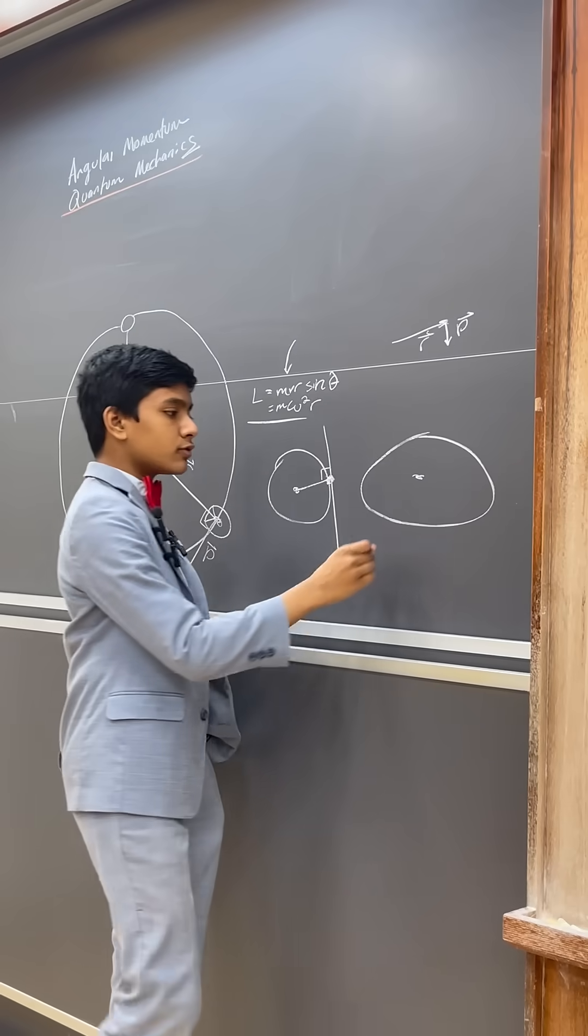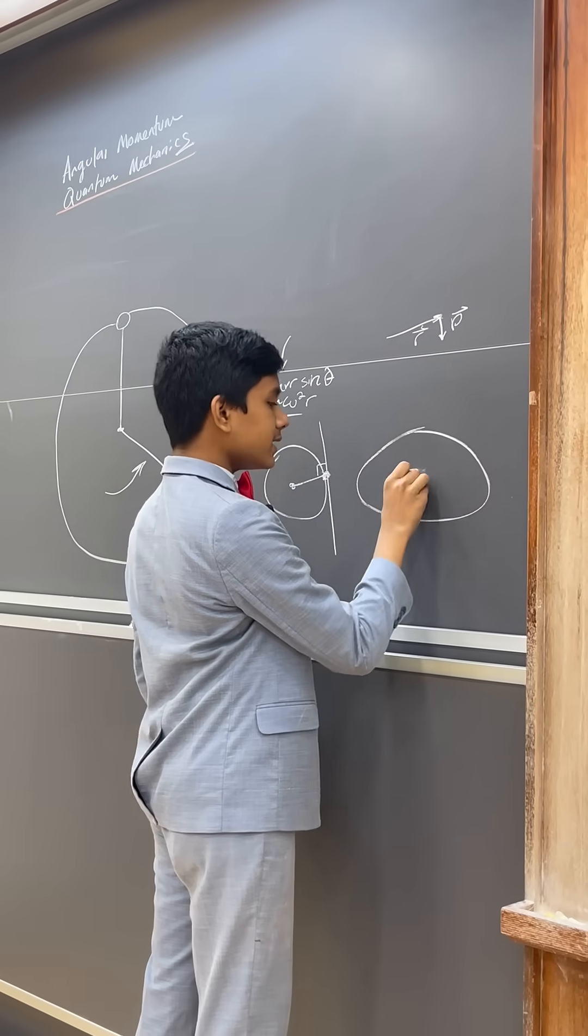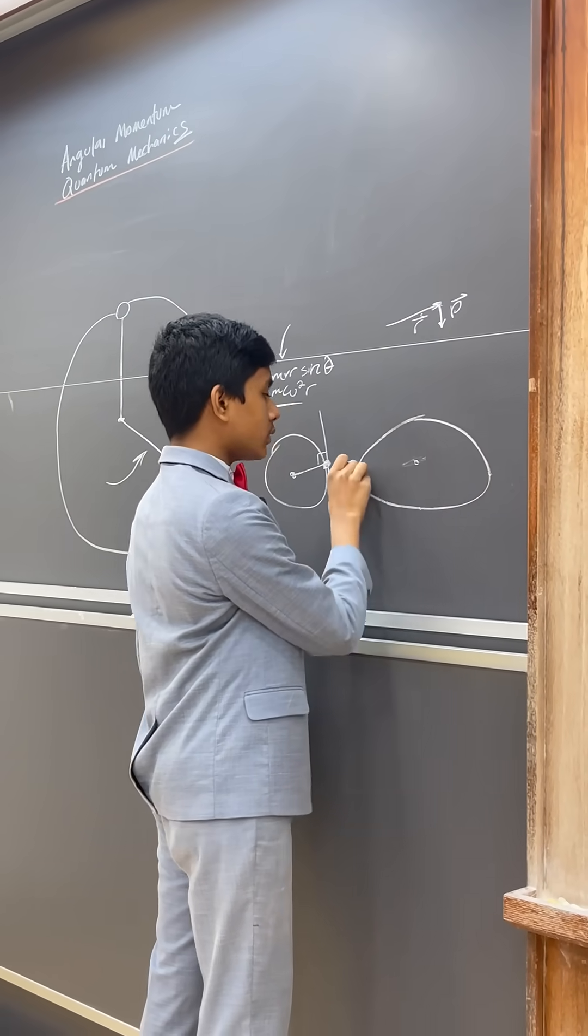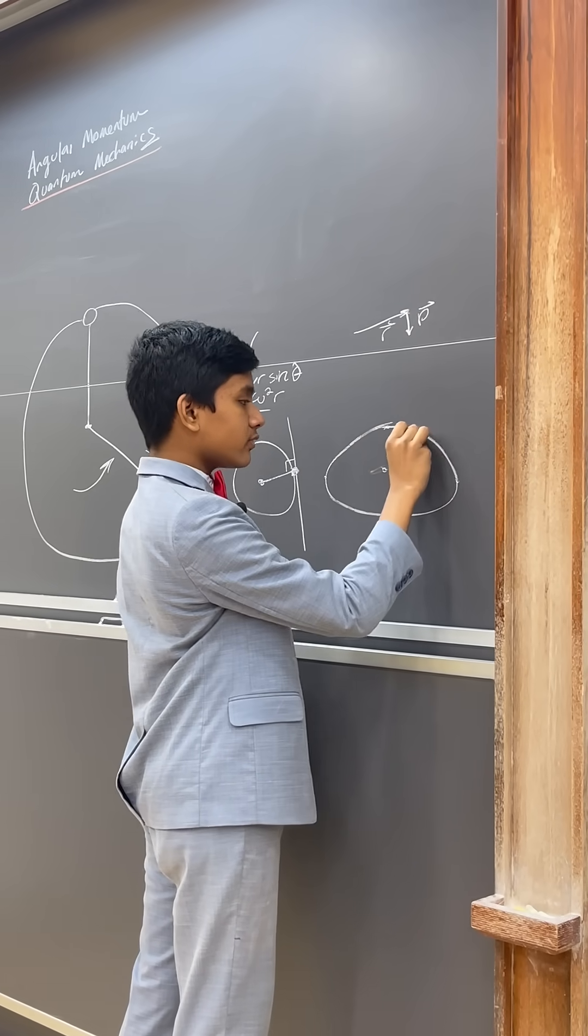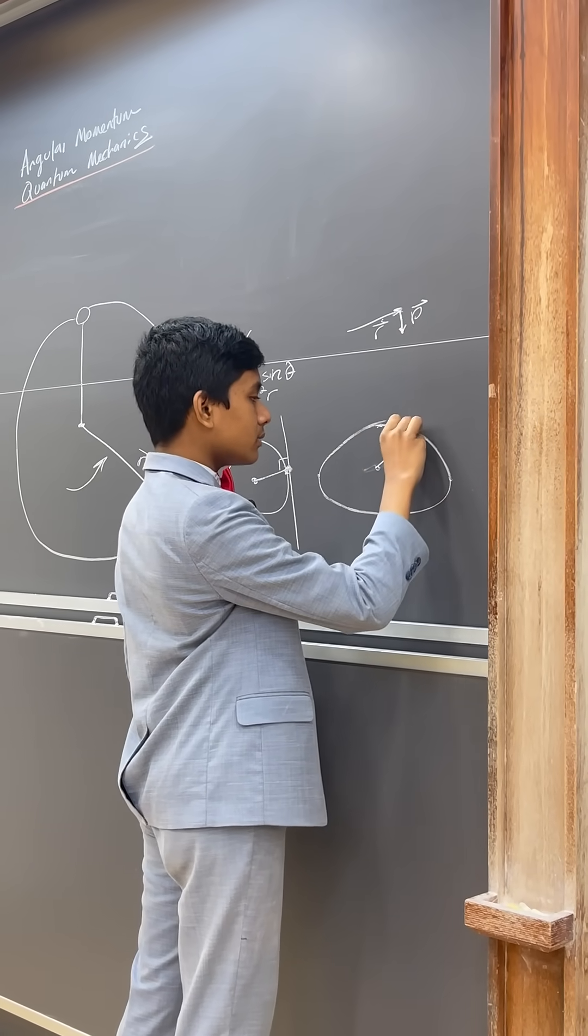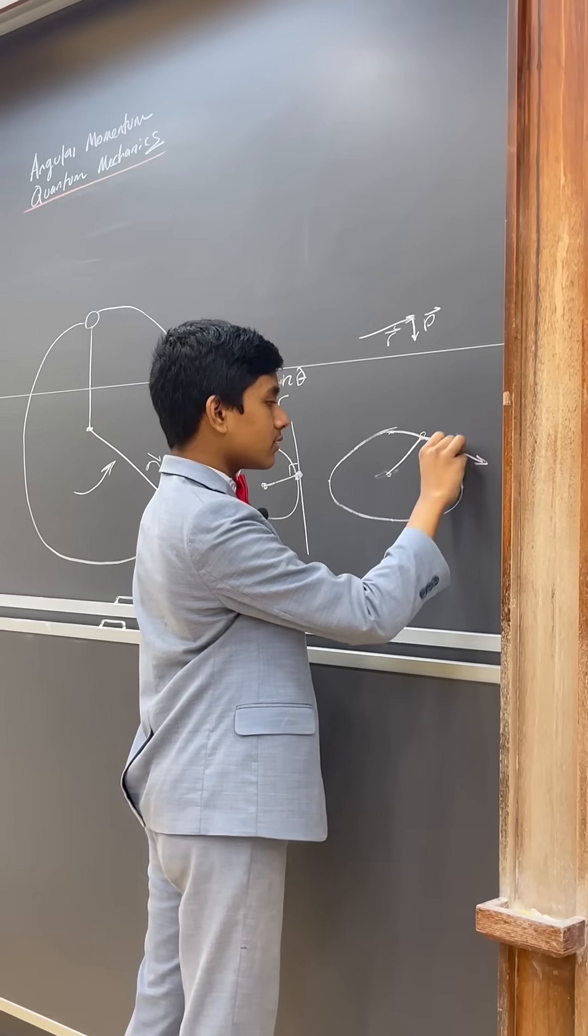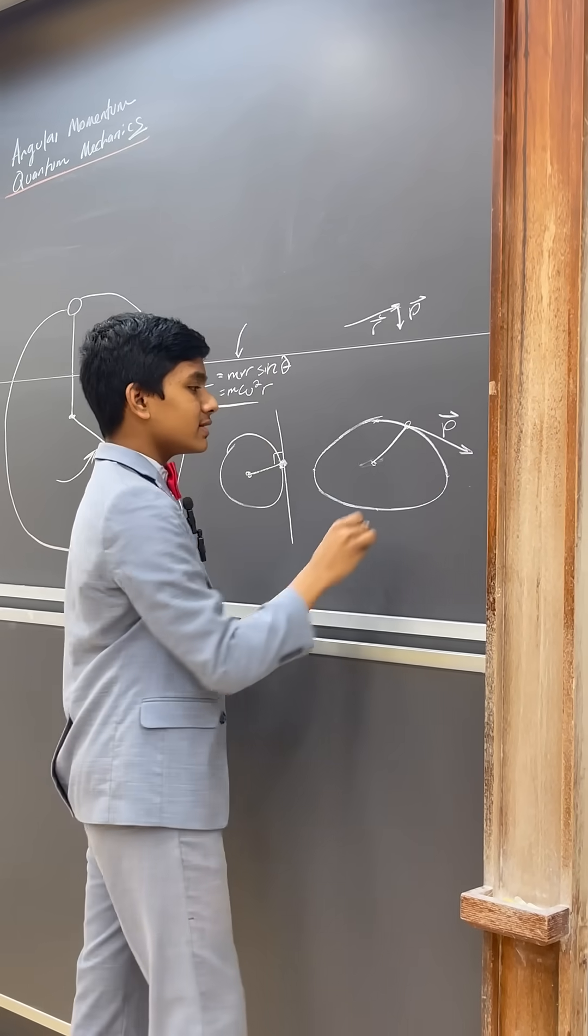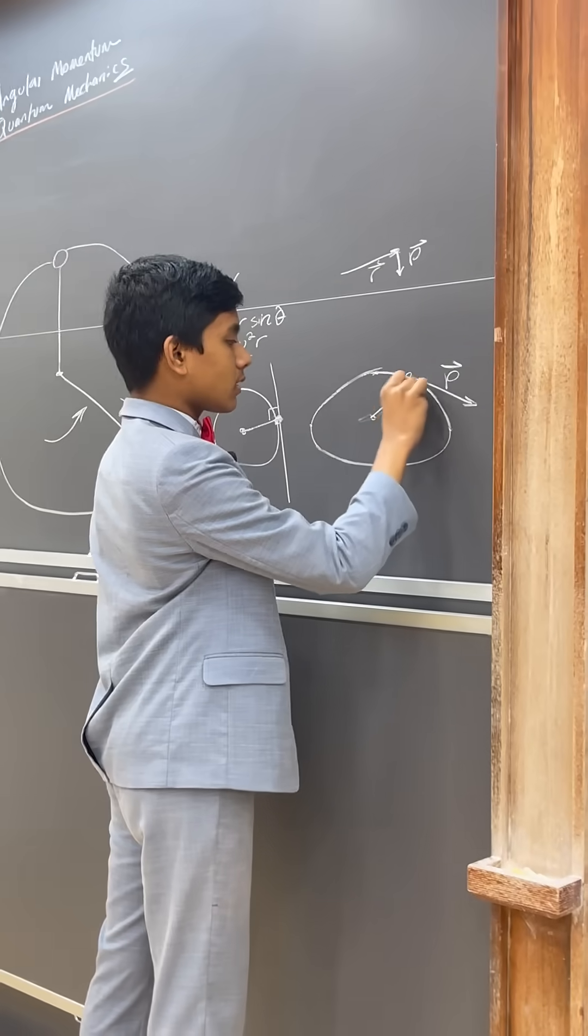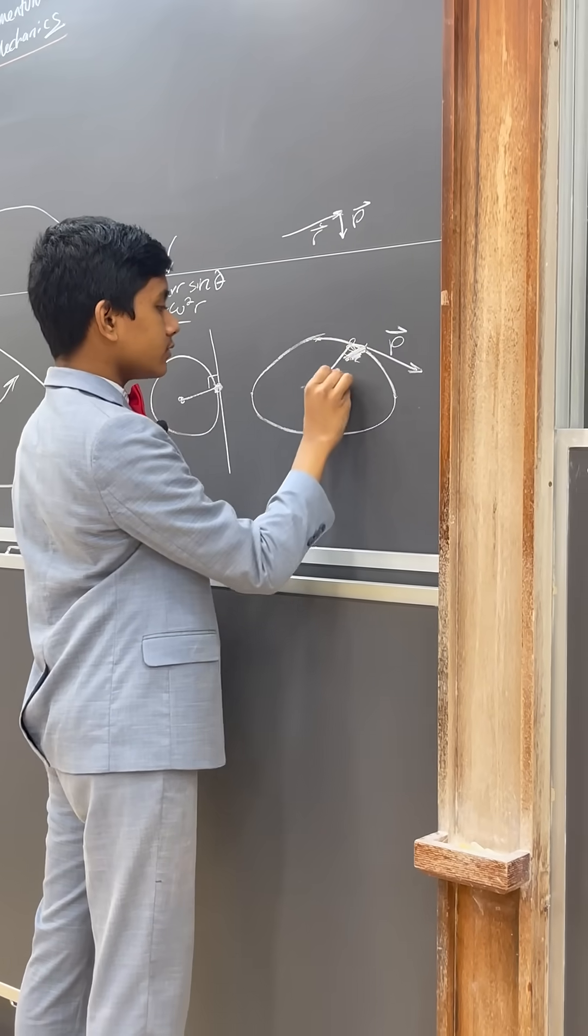But when that's not true, when we're dealing with an ellipse, it's true in these four points specifically. But if you take this point, for example, the momentum vector is definitely not perpendicular to the radial vector.